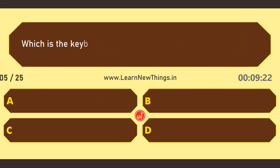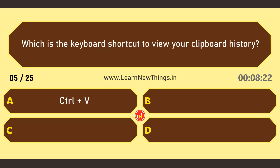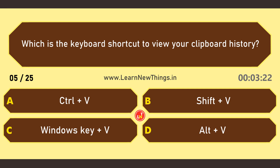Which is the keyboard shortcut to view your clipboard history? CTRL+SHIFT+Windows key+V.